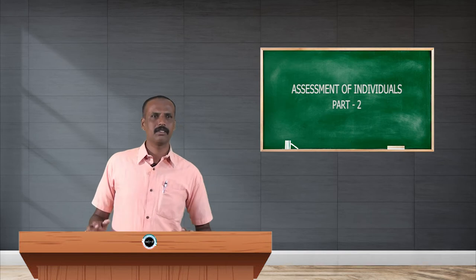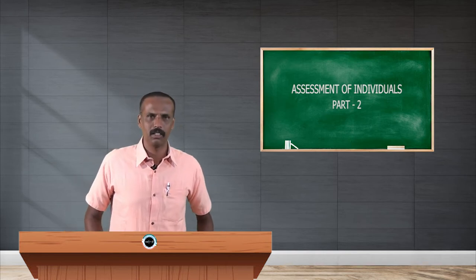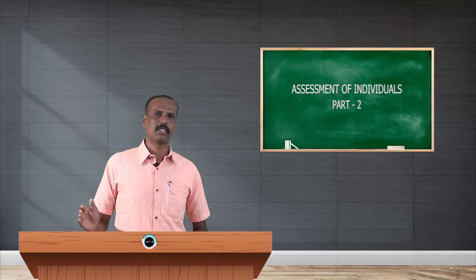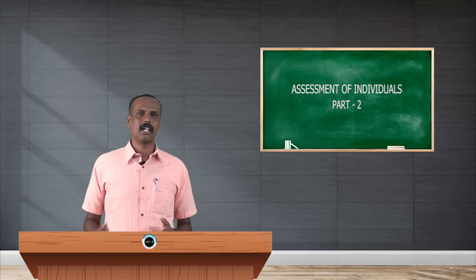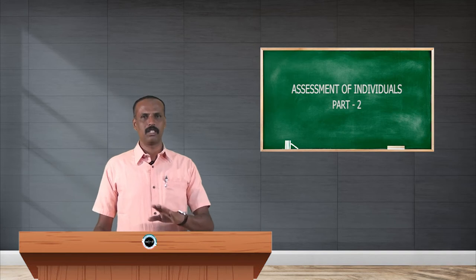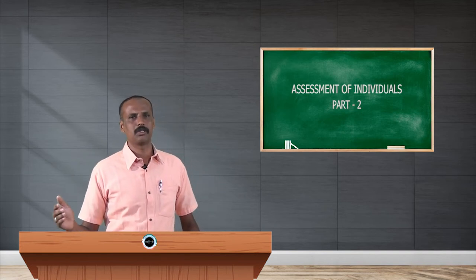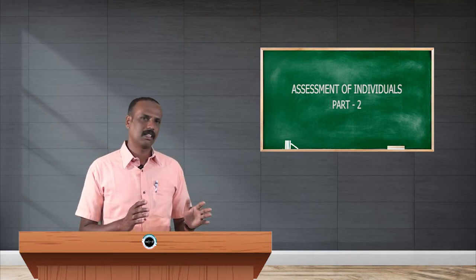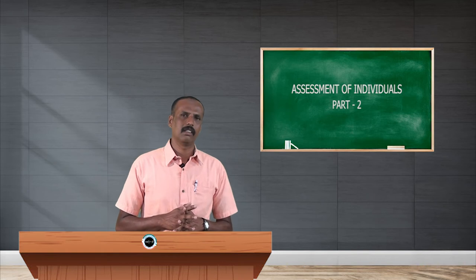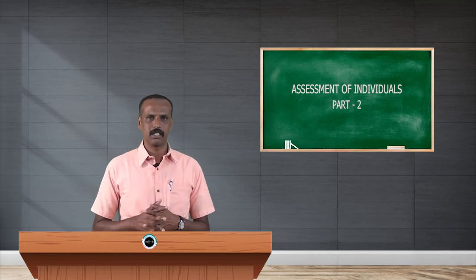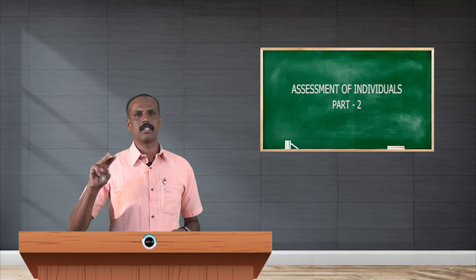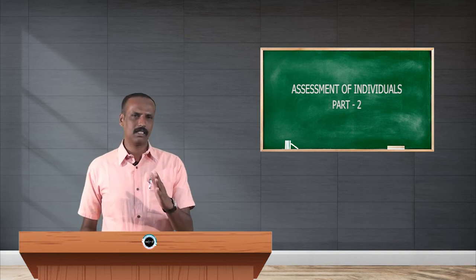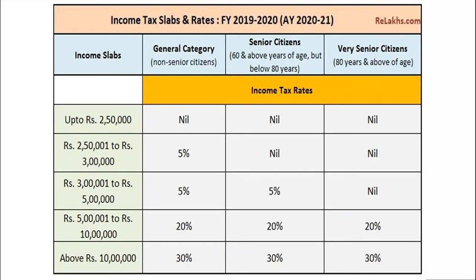As of now we are in financial year 2019-20, which will end on 31st March 2020. The assessment year starts from 1st April 2020 and ends on 31st March 2021. There are slabs depending upon the age of the assessee. For individual assessee there are three categories: age less than 60 years, 60 to less than 80 years, and 80 years and above.